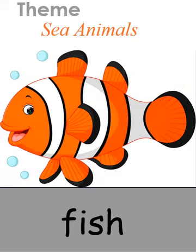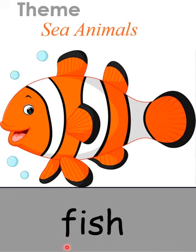Okay, we go to the first animal. This is a fish. How do we spell fish? F-I-S-H. Fish. I repeat again. F-I-S-H. Fish.